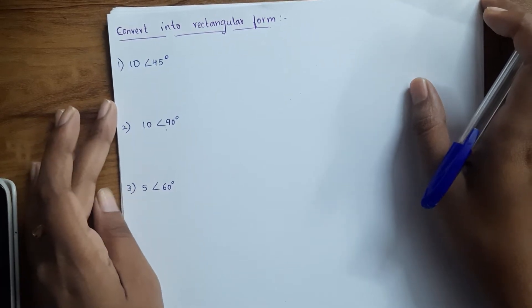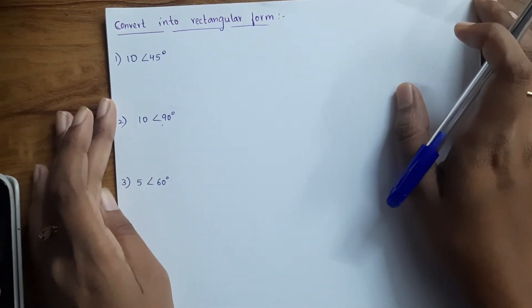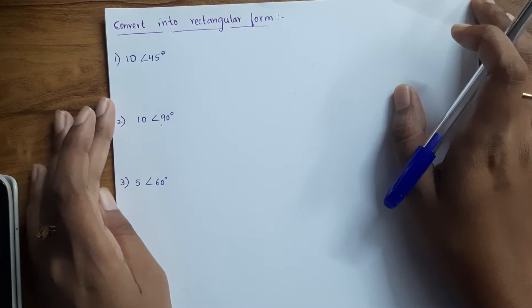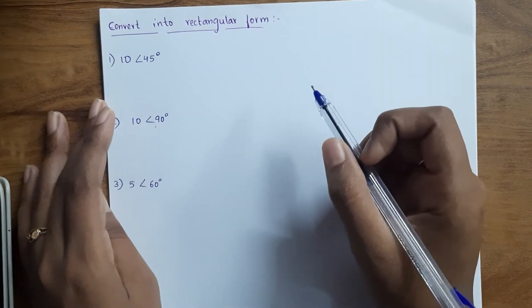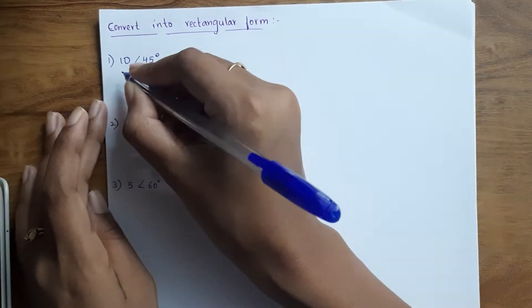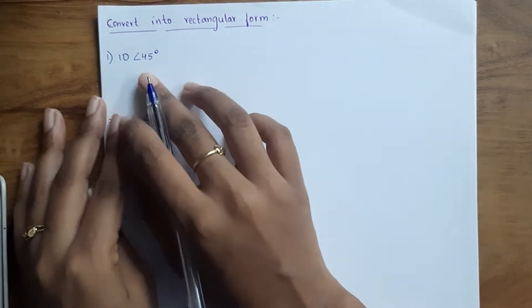Hello guys, welcome back to my channel. Nerdy Nerdy is the name. So today we are going to see how to convert the polar form to rectangular form. The given is in the polar form, so we're going to convert it into a plus ib form.